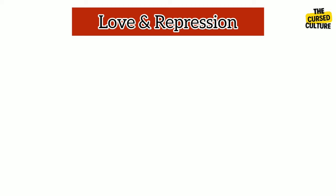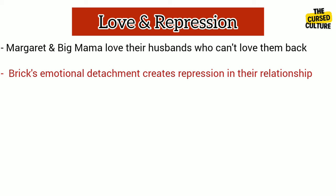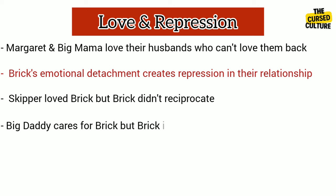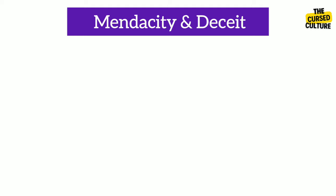The characters grapple with their desires and often suppress their true feelings, leading to emotional tension and isolation. Maggie and Big Mama love their husbands deeply, but sadly their husbands can't love them back in the same way. Maggie's desire for Brick is clear throughout the play, but Brick's avoidance and emotional detachment create a sense of repression in their relationship. Skipper loved Brick but Brick didn't reciprocate. Big Daddy cares for Brick a lot, but Brick is too drunk to show love in return. Brick's alcoholism and emotional detachment isolate him from his wife and family, making him a symbol of loneliness.